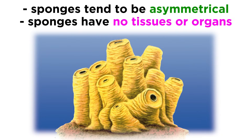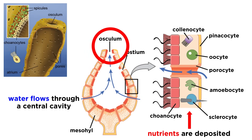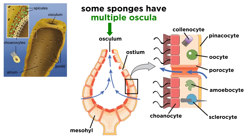Sponges don't even have a mouth or anus, so there is no digestive tract. Instead, their unique body shapes are adapted to allow for maximal efficiency of water flow through their central cavity, where the water deposits nutrients and then leaves through a hole on their top end called the osculum, meaning 'little mouth.' Some species might have several oscula, though most have just one.